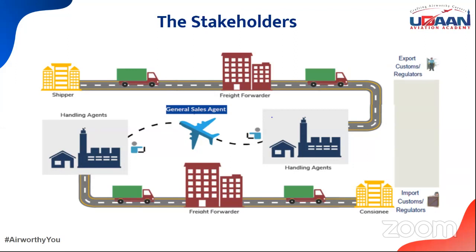There is a customs agent and a regulator. The customs agent ensures clearances for a shipment, and a regulator handles other regulatory approvals — especially for pharmaceuticals, live animals, or precious goods requiring special clearances. Then you have ground handling agents, who ensure the shipment is taken over from the agent or shipper for transportation on the aircraft. You also have a GSA or General Sales Agent, responsible for sales in a particular geographical area. All these stakeholders are present on both the export and import sides of the process.